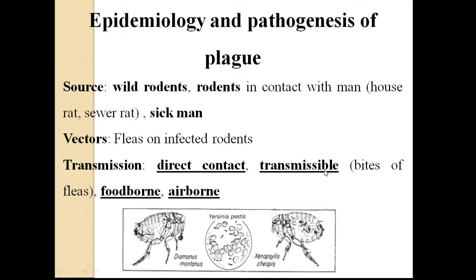When plague is transmitted by flea bites, we discuss vectors. Vectors are insects that transfer bacteria from rodents to humans — so vectors are fleas. Importantly, fleas are not a source of infection. The source of infection is sick living organisms — humans and animals — whose organs are infected and destroyed with clinical symptoms. Fleas are not themselves infected by Yersinia pestis; they just transfer it. When they bite, droplets of blood contain large numbers of Yersinia.